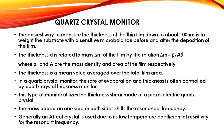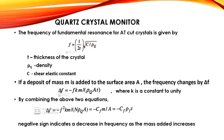In a quartz crystal monitor, the rate of evaporation and the thickness is often controlled by a quartz crystal thickness monitor. This type of monitor utilizes the thickness shear mode of a piezoelectric quartz crystal. Mass added on one or both sides shifts the resonance frequency. Generally an AT-cut crystal is used due to its low temperature coefficient of resistivity for the resonant frequency. The frequency of fundamental resonance for AT-cut crystals is given by f = (1/2t) × √(C/rho_q), where t is the thickness of the crystal, rho_q is the density, and C is the shear elastic constant.